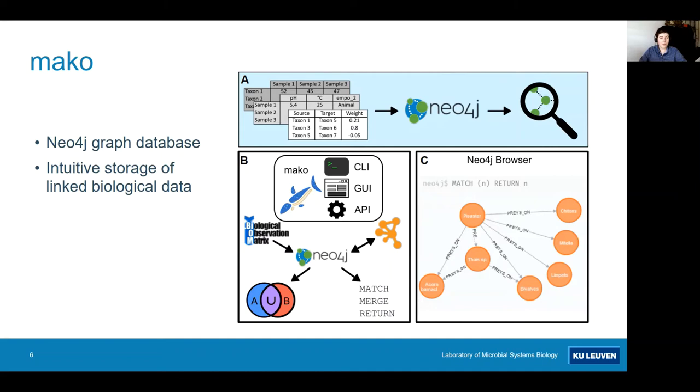And this is where Mako comes in because it facilitates the use of Neo4j graph databases. Why would you want to use such a graph database? Well, it's a really intuitive method for actually storing biological data.